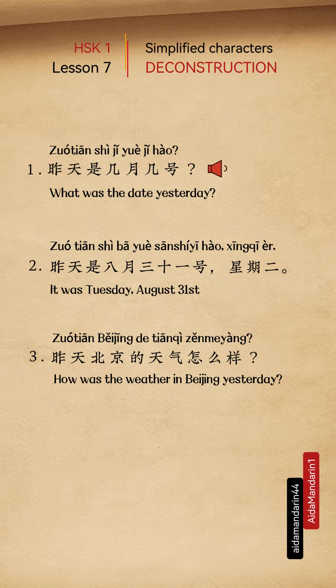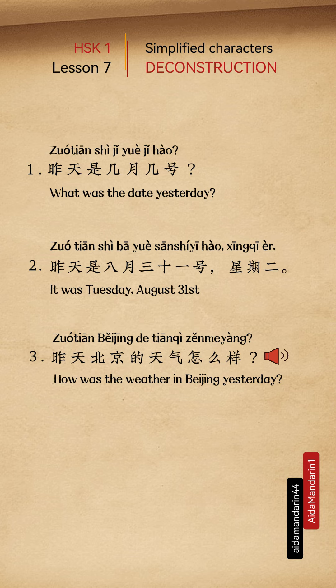昨天是几月几号? What was the date yesterday? 昨天是八月三十一号，星期二。 昨天，北京的天气怎么样? How was the weather in Beijing yesterday?